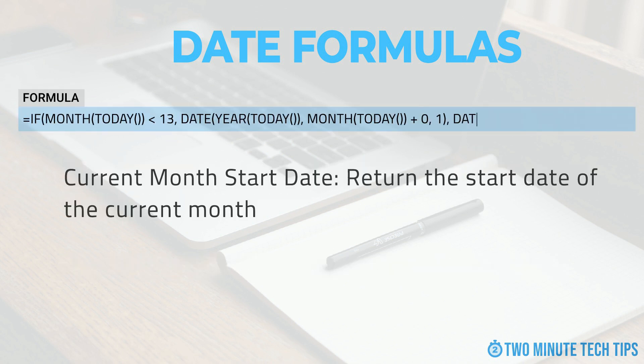In the last example we will show the formula to return the start date of the current month. To do this we will use a combination of the MONTH, DAY, and YEAR formulas. We can change the 1 in the month formula to a different number if we want to return a different date in the current month.